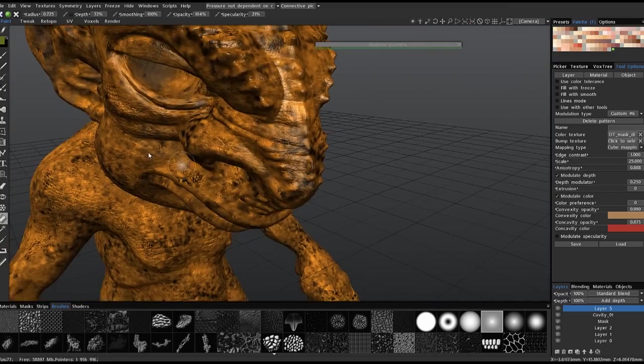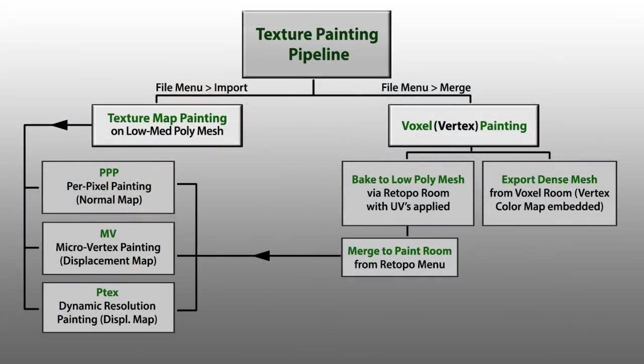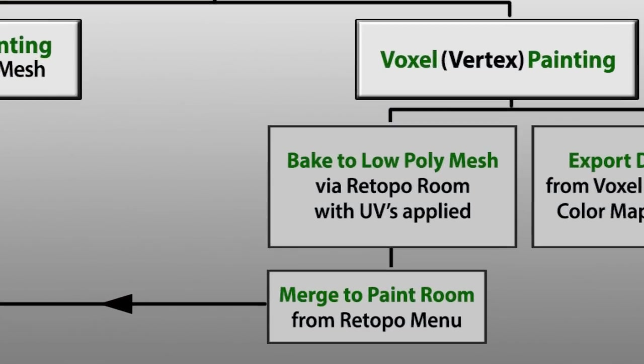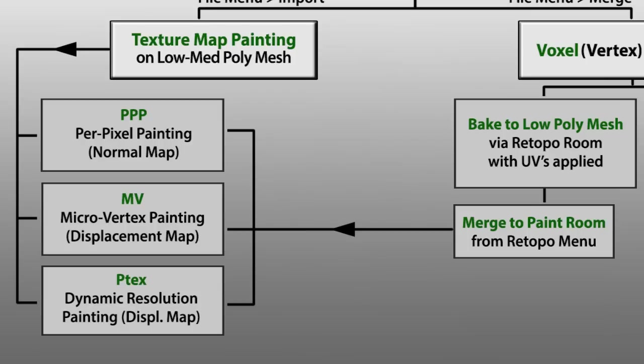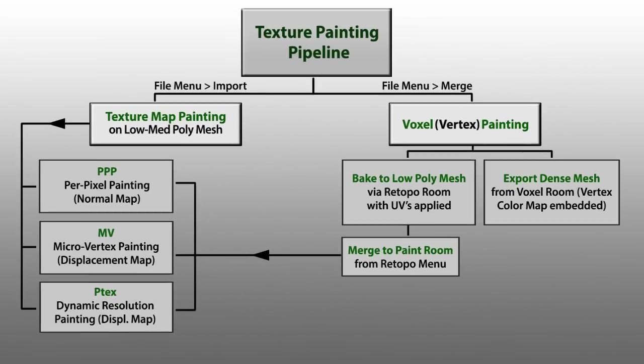Once you're done with your vertex painting, if you want to bake everything down to a low polygon retopologized mesh, at that point you could resume texture painting on image maps that are UV-based. I hope these tips help, and thank you for watching.